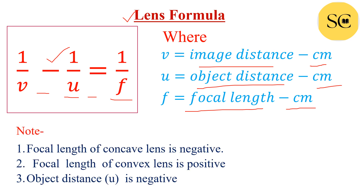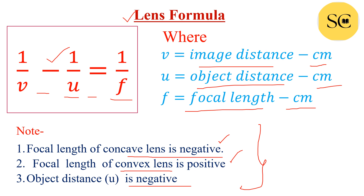Focal length of concave lens is negative and focal length of convex lens is always positive. First, read the question and note which lens we have been given. Object distance U is always taken to be negative. Note down these points in your notebook and when you put the values, according to these points, put the right sign.